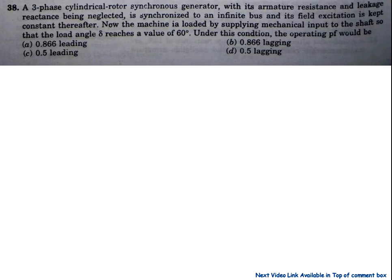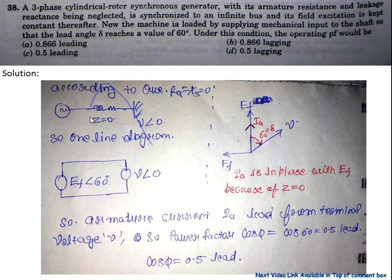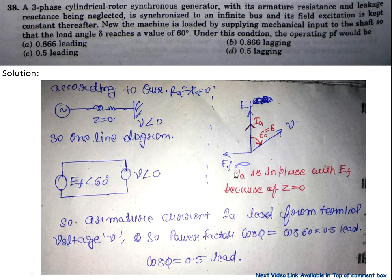Now question number 38: A three-phase cylindrical rotor synchronous generator with armature resistance and leakage reactance neglected is synchronized to an infinite bus. Field excitation is kept constant. The machine is loaded by supplying mechanical input so that load angle δ reaches 60 degrees. Since Z is 0, the armature current IA is in phase with EF.